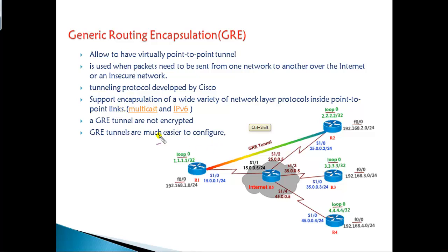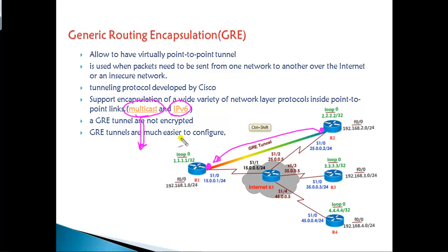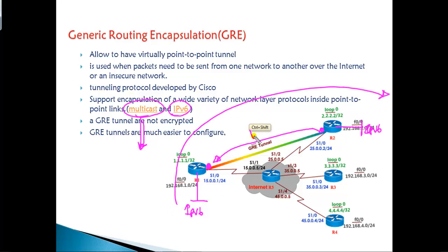GRE also allows you to run routing protocols. You can establish a tunnel between Router 1 and Router 2 and have an OSPF or EIGRP neighborship established between them. It also allows multicast traffic and routing protocol traffic. Additionally, you can have IPv6 customers on both sides and allow IPv6-to-IPv6 communication over an IPv4 network by building GRE tunnels.